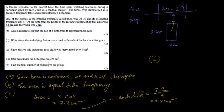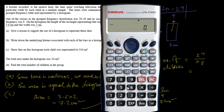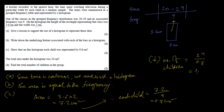In the next question, the total area under the histogram is 24 cm². That means if all the rectangle areas are summed, they total 24 cm². Since one child represents 0.8 cm², the total number of children is 24 divided by 0.8, which equals 30 children.